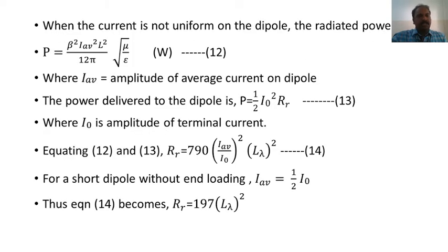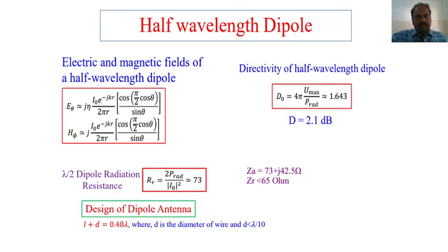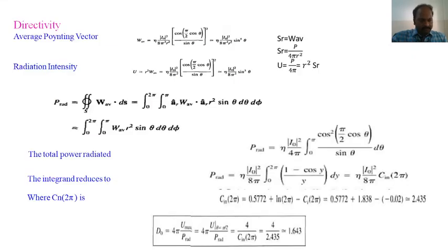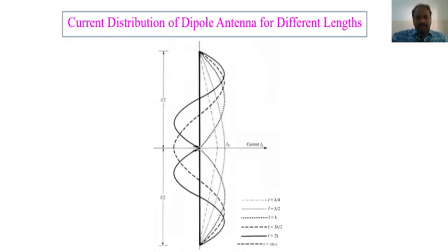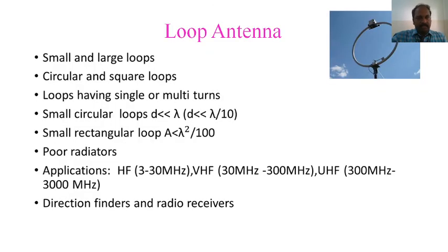Next, we have the half-wave dipole antenna. Half-wave dipole means the length of the dipole is lambda divided by 2. By taking the half-wave dipole antenna and placing the antenna, we see how radiation takes place and how the field components can be calculated. These are the field components existing for the half-wave dipole antenna. By using those field components, the directivity, gain, and radiation resistance — all those parameters — can be calculated. This is the radiation pattern of the dipole antenna for different lengths.